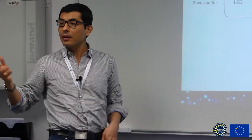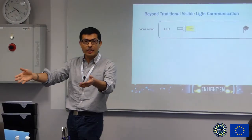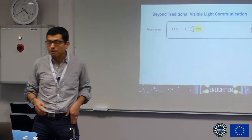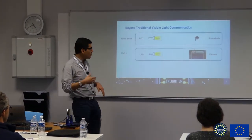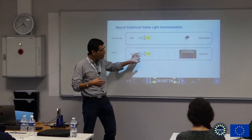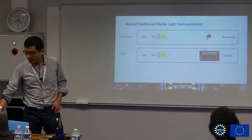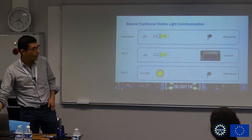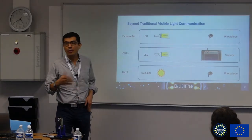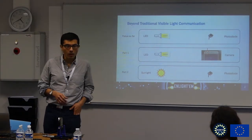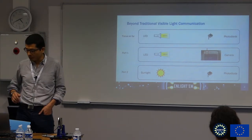Until now, what we have been seeing is an LED and mainly a photodiode, which is the nice demos that we have had. But we can use different transmitters and receivers for visible light communication. We can still use an LED and a camera, and you will see that it behaves completely different. And if we don't have any lights, we can still use sunlight and a photodiode or a camera to communicate as well. So those are the two main parts I'm going to be delivering over the next 30 minutes.